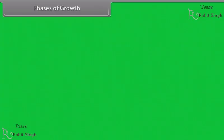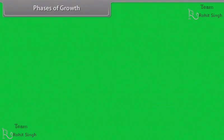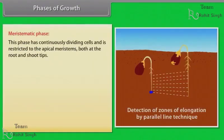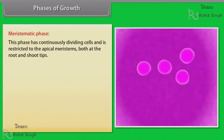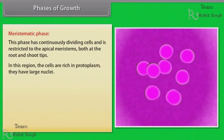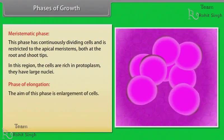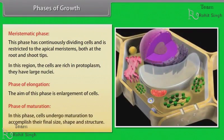The period of growth is divided into three phases: meristematic, elongation and maturation. The meristematic phase has continuously dividing cells and is restricted to the apical meristems, both at the root and shoot tips. In this region, the cells are rich in protoplasm and have large nuclei. The phase of elongation aims at enlargement of cells. In the phase of maturation, cells undergo maturation to accomplish their final size, shape and structure.